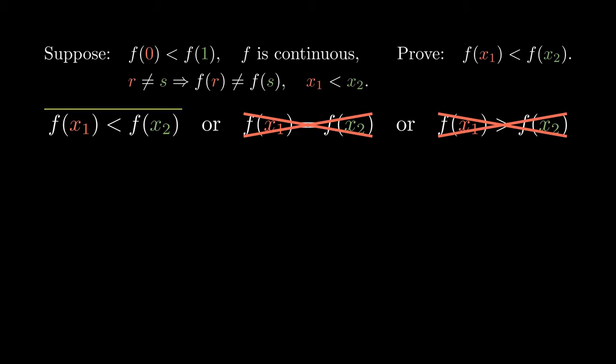This leaves us with one and only one possible conclusion. That is, the smaller input gives us the smaller output. For the formal proof, you can check out the document in the description box below.